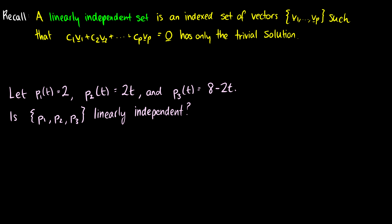A linearly independent set is a set of vectors such that the linear combination of vectors equal to zero has only the trivial solution — where c1 equals c2 all the way up to cp, and all the scalars are equal to zero.